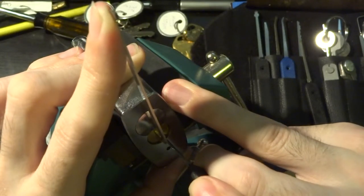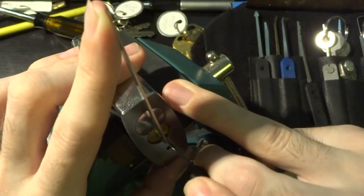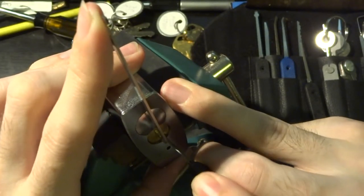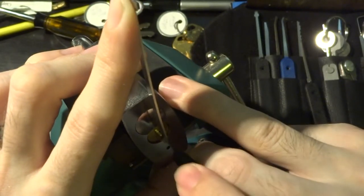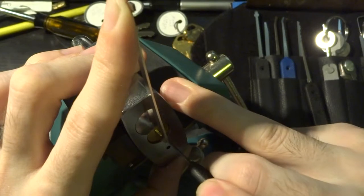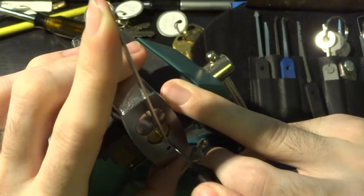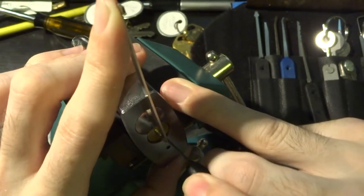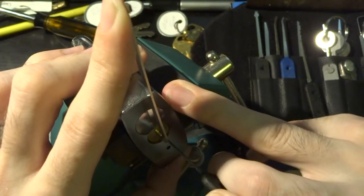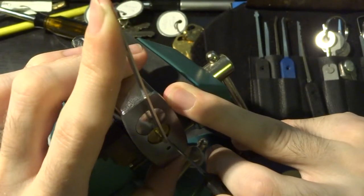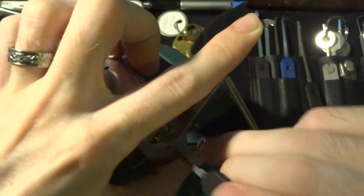Now it feels like number three is unset again, and now four. So this is the hard part. When you have a false set, some of these spool pins will not give you a lot of feedback about whether or not they are binding. And now it's number two that needs to be set. We have to very carefully back off our tension, and there we go. So we've got it open.